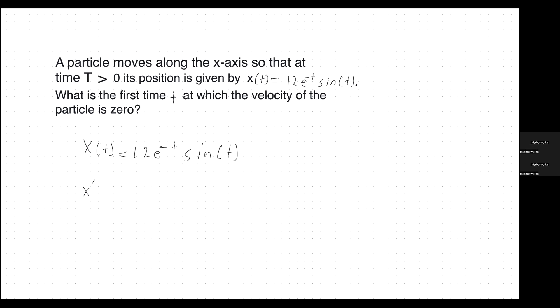So x prime of t is equal to the derivative of 12e to the negative t times sine of t. The way we approach taking this derivative is with the product rule, involving 12e to the negative t and sine of t. For the first part, we leave 12e to the negative t by itself and multiply by cosine of t, because the derivative of sine of t is cosine of t.